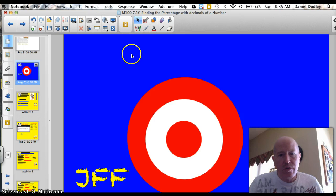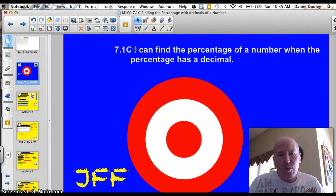Tonight's official target, 7.1c, I can find the percentage of a number when the percentage has a decimal. Let's do this thing.